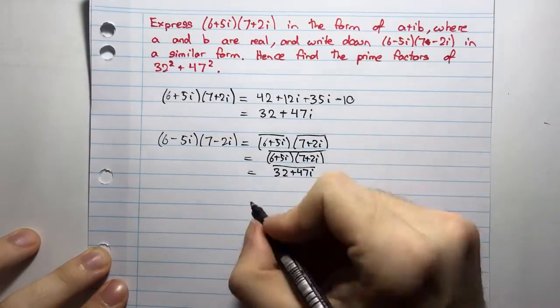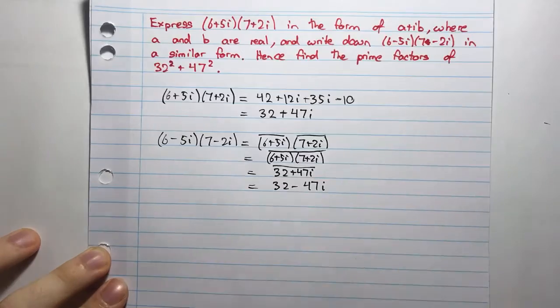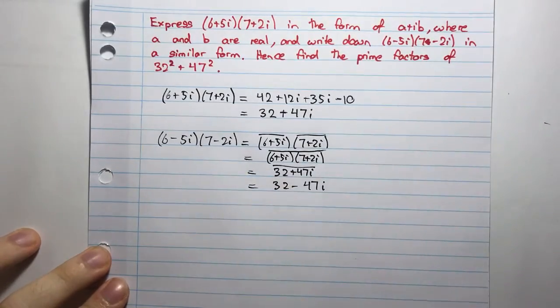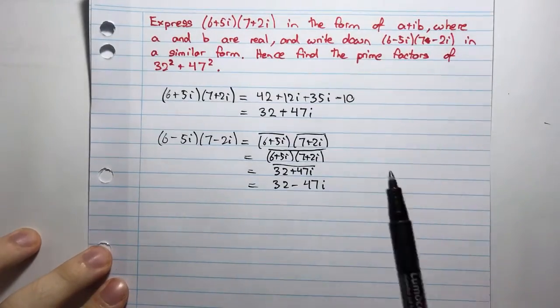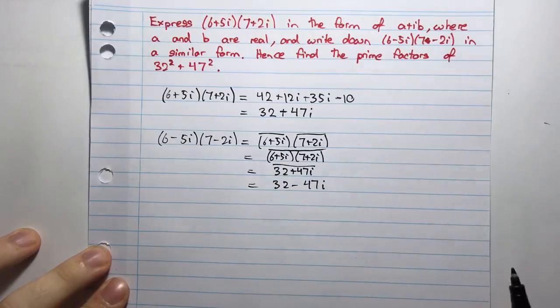So I'm taking the conjugate of 32 plus 47i, I should say. Okay, and well, that's very simple, 32 minus 47i. Good. So, now I have these two things here, which is the first part of the question.